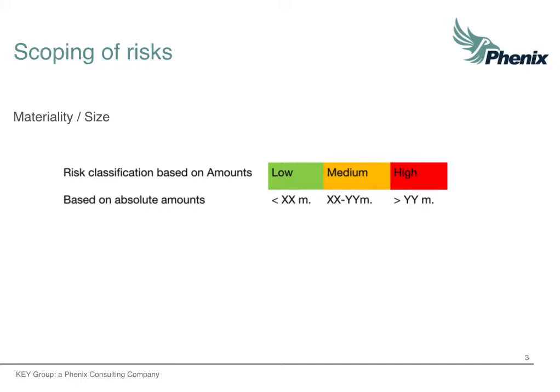Slide 11 is about the materiality of tax risks and a company's risk appetite. Scoping of risks based on amounts is fairly straightforward: if a balance sheet item or profit and loss account is higher than a certain value, the risk is considered high; if it is below a certain value, the risk is considered low. The value that drives the classification is set by the organization. Managing risks on absolute amounts only is insufficient, as VAT complexity and the impact of change should be considered as well.